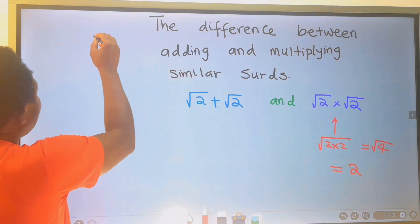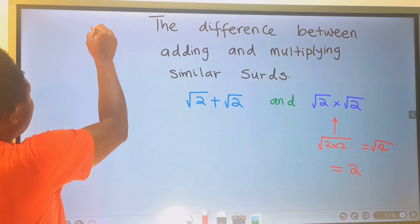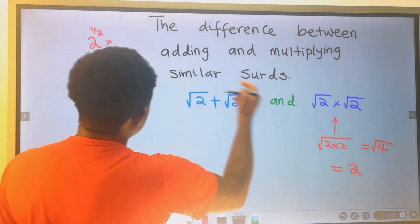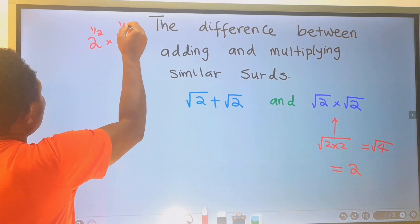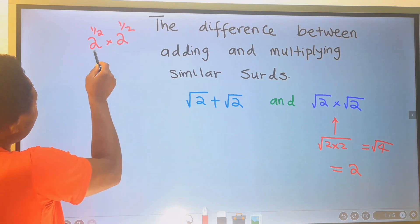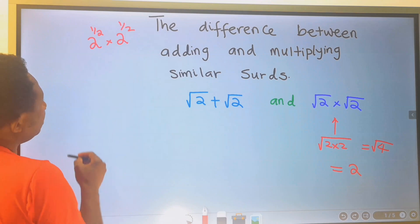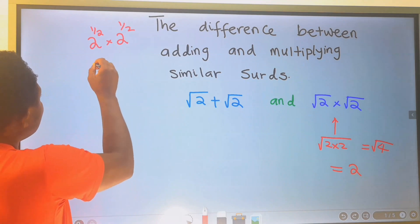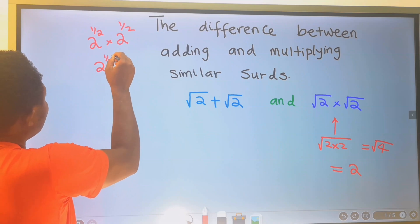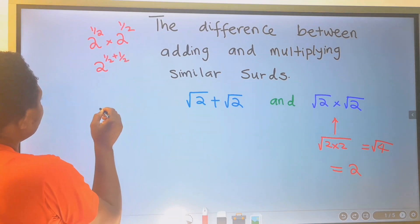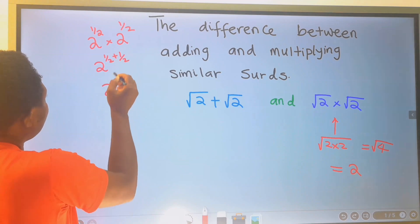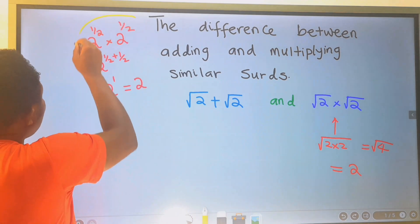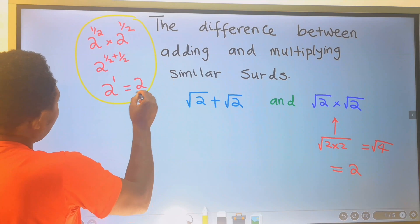We can also apply the law of indices. 2 to the power of 1 over 2 is the same as the square root of 2, so we have 2 to the power of 1/2 times 2 to the power of 1/2. Applying the law of indices, we add the exponents: 1/2 plus 1/2 equals 1, giving us 2 to the power of 1, which is 2. You can see that applying the law of indices, we also obtained 2.